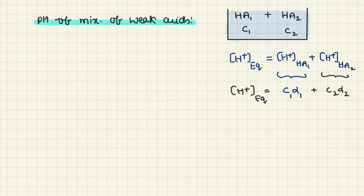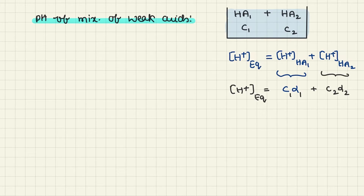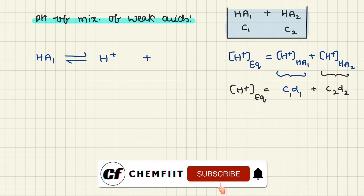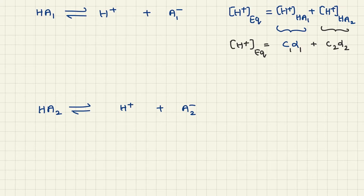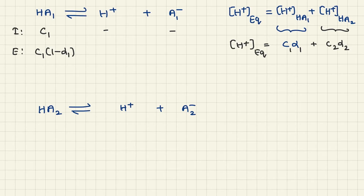This H+ concentration is common to both equilibrium states. For the first equilibrium: HA1 ⇌ H+ + A1−. Initially the concentration of HA1 is C1 and the ion concentration is 0. At equilibrium, the concentration of HA1 is C1(1 − α1), the H+ concentration is C1·α1 + C2·α2, and A1− concentration is C1·α1.